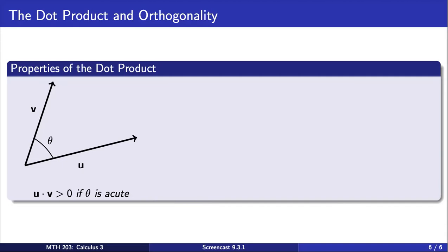Based on the values of cosine, we can gather more information from this relationship. If the angle theta is acute, then cosine of theta is positive. Therefore, the dot product of two such vectors must be positive.